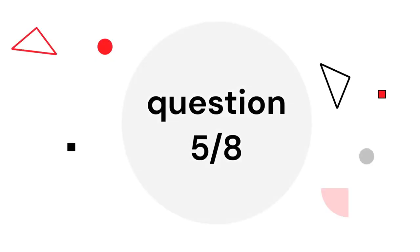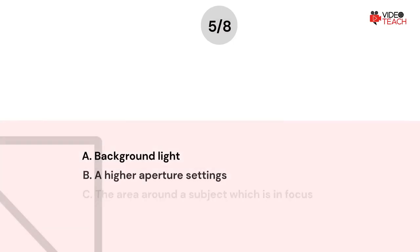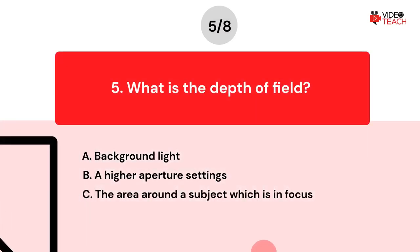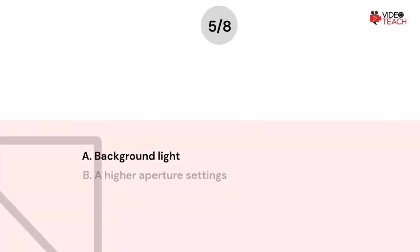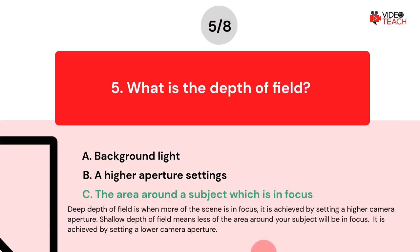Question number five. What is the depth of field? Option A: Background light. Option B: A higher aperture setting. Option C: The area around a subject which is in focus. The correct answer is Option C. Deep depth of field is when more of the scene is in focus. It is achieved by setting a higher camera aperture.